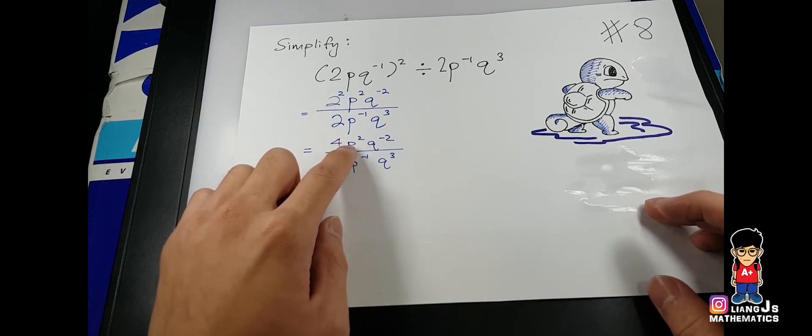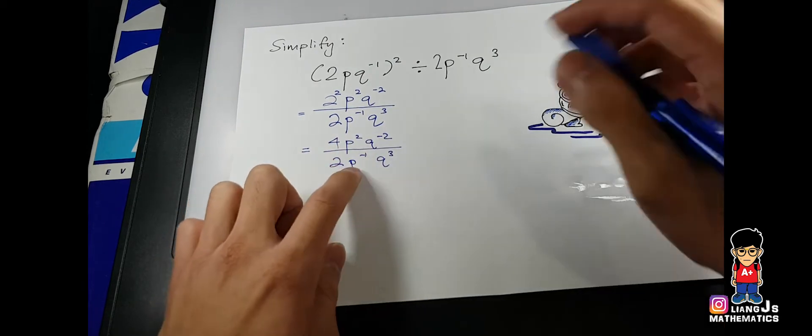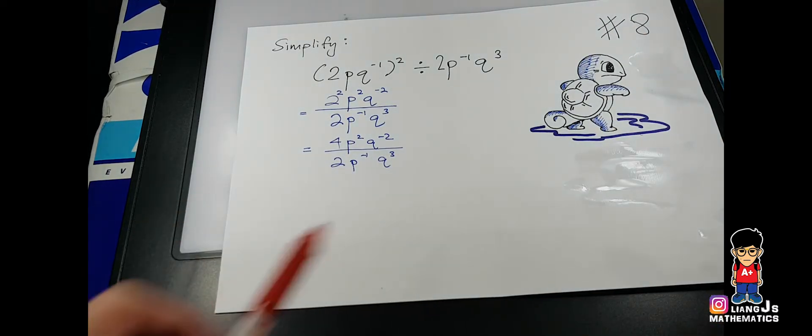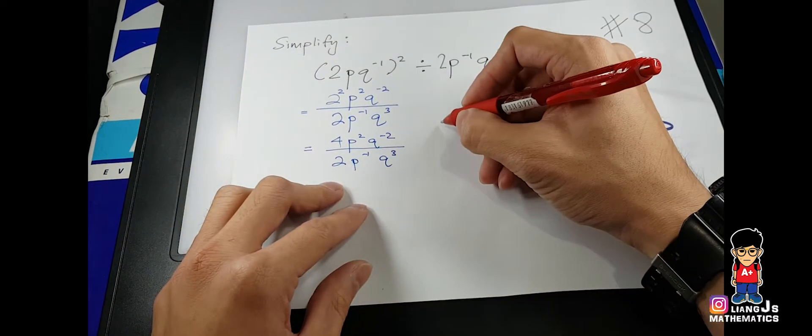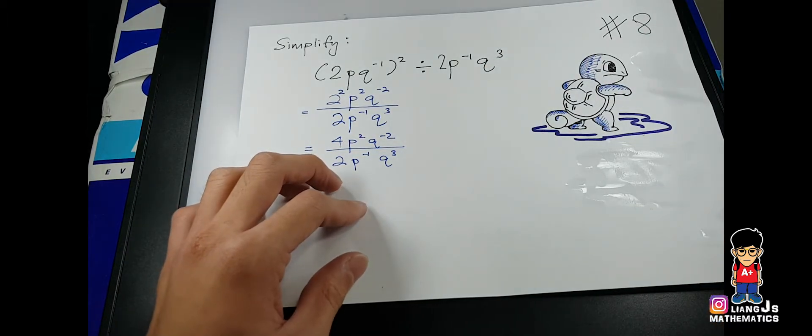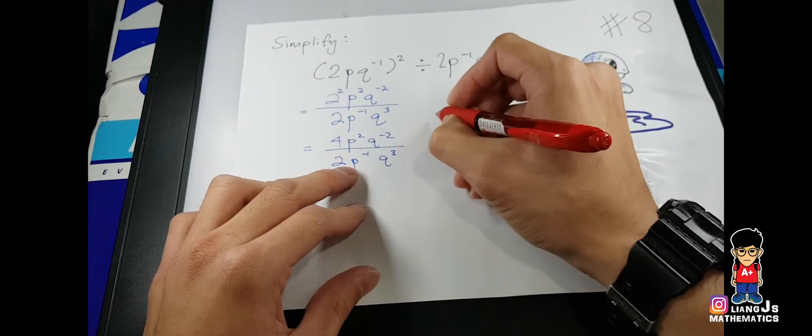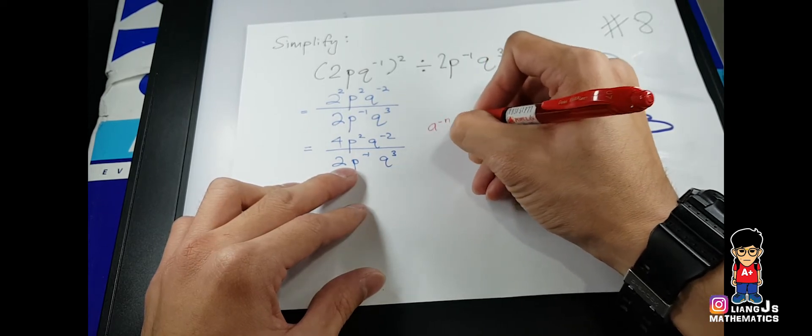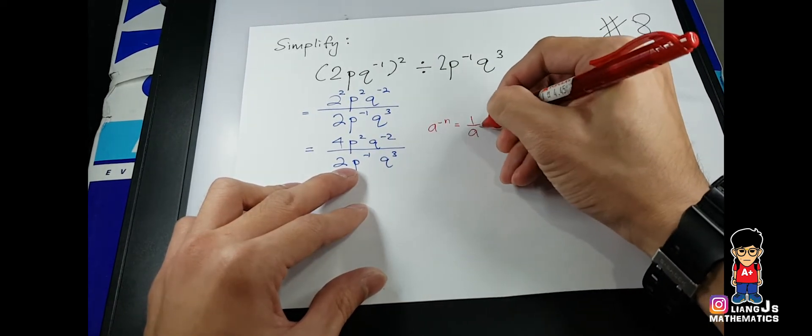If let's say you break it out under algebraic expression context, it's 4 times P times P, and this one we leave it first. Let me show you under indices what can we do. Under indices, I believe you come across a^-1 equals to 1 over a.